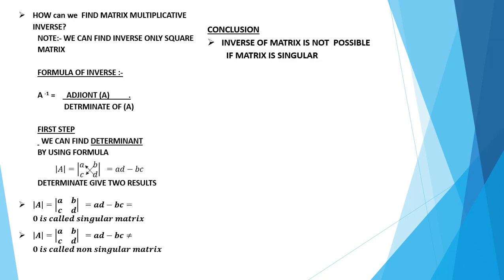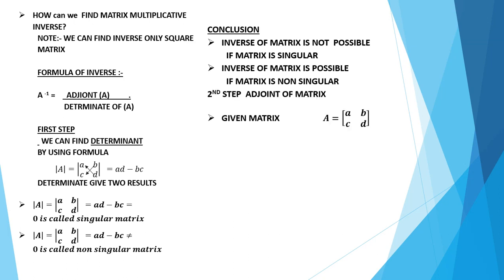Conclusion: the inverse of a matrix is not possible if the matrix is singular. The inverse of a matrix is possible if the matrix is non-singular. The second step is finding the adjoint of the matrix.